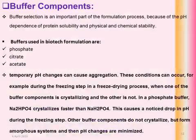Buffer selection is an important part of the formulation process because protein solubility, physical, and chemical stability depend on pH. Buffer systems regularly encountered in biotechnology formulations include phosphate, acetate, and citrate buffers.